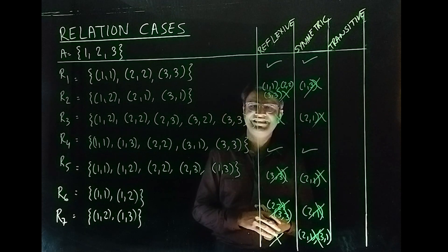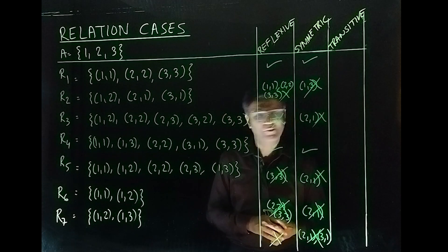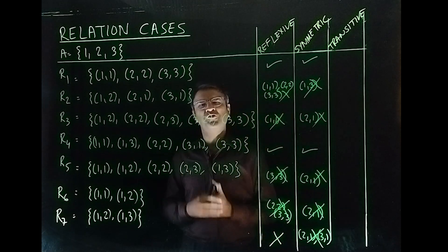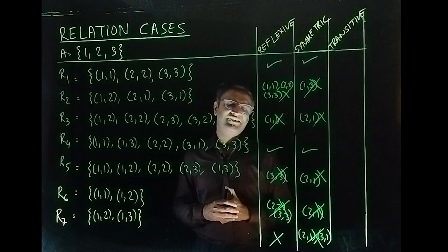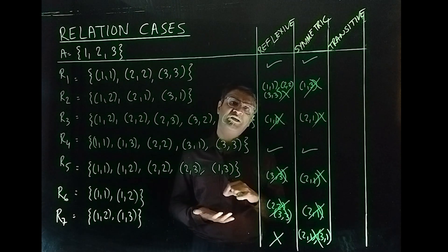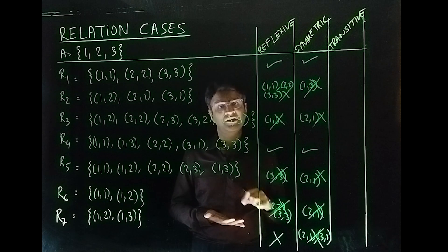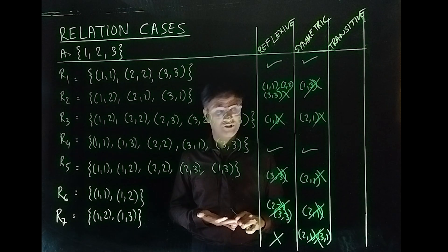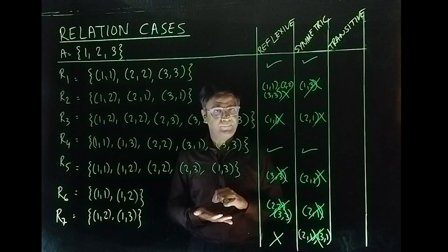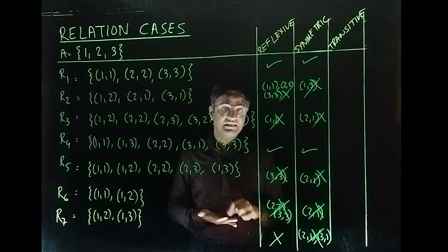Now that we are done with reflexive and symmetric, let's see what transitivity is all about. That's the most complicated part, actually. It's like if A is related to B, B is related to C, then A will be related to C in this order.